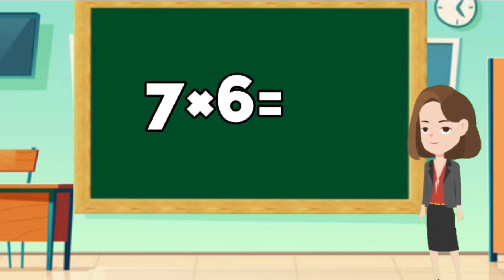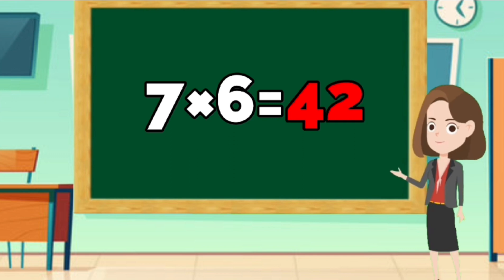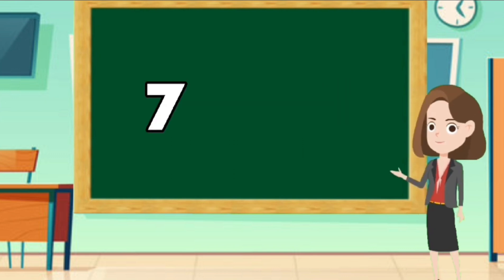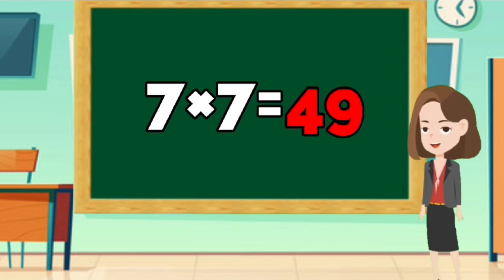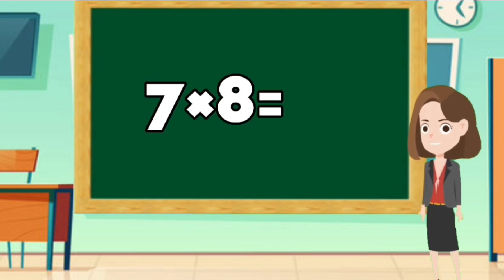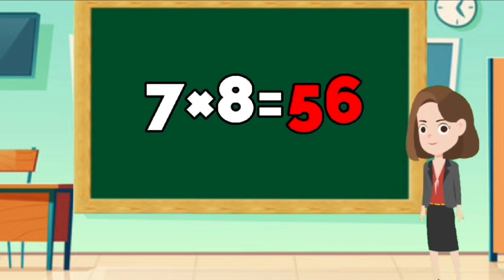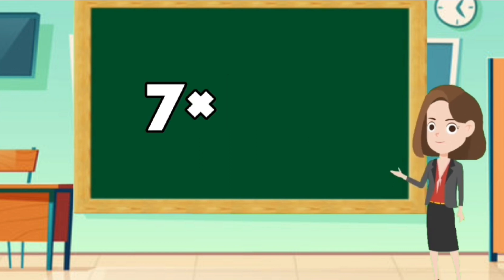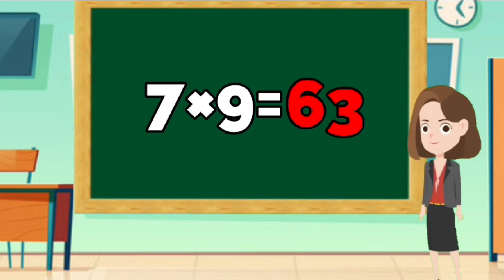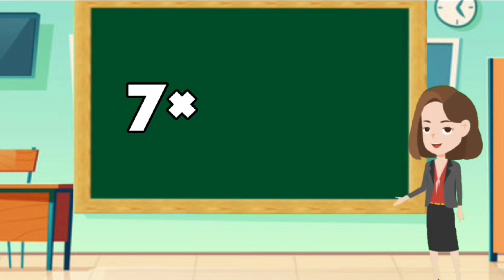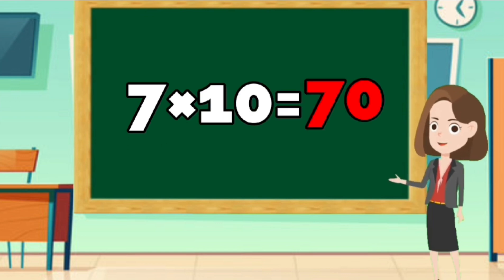7 times 6 is 42. 7 times 7 is 49. 7 times 8 is 56. 7 times 9 is 63. 7 times 10 is 70.